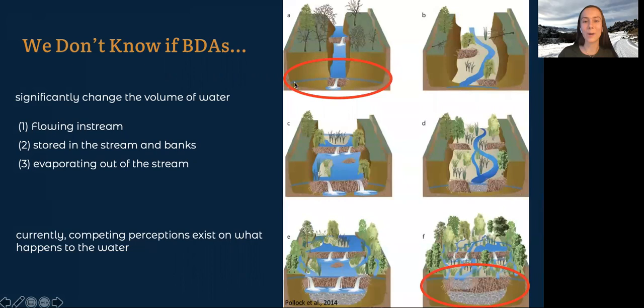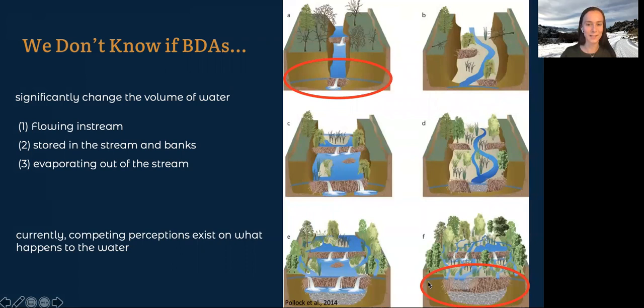Here you can see that up top there is this thin blue line in this model that represents the groundwater table, and as you step through time the stream gets healthier, there's more vegetation and diverse stream morphology, and at the end this groundwater table is up a lot higher than it started, which is great for the ecosystem, but we don't actually have data that proves that's what happens. It's just a conceptual model.